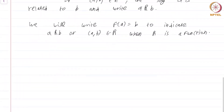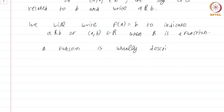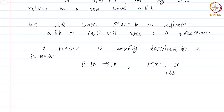How do you specify functions? There are several ways. The most common way is of course a formula. For example, you can say F from R to R where the function is F(x) = x. This is called the identity function — the transformation does nothing; it takes the input and just leaves it as it is. You can define this identity function for any set.